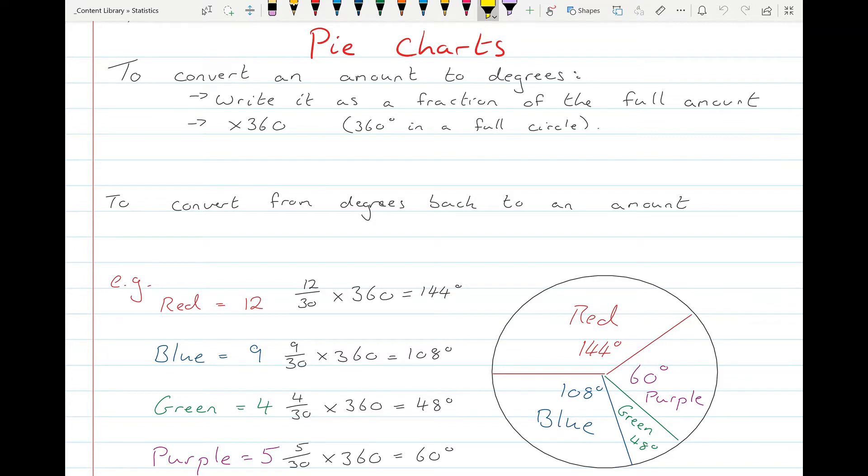And then to convert from degrees back to an amount, you will write the number of degrees it was given over 360 and multiply by the total amount or total frequency in the problem. We'll look at both now.